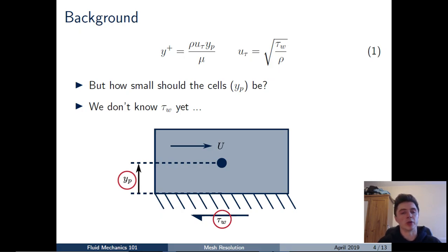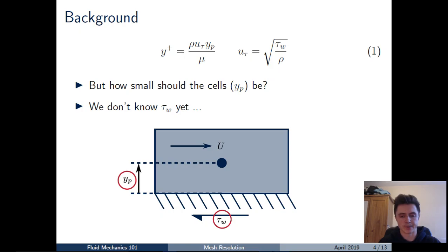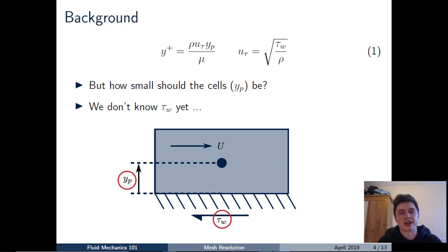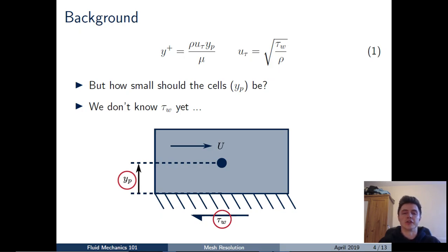We're going to be targeting a value of Y-plus: less than five for a viscous sub-layer resolved treatment, or between 30 and 200 for a log-law model. Before starting our CFD simulation, we don't yet know what Y-plus is. To target a value of Y-plus, we need to know how large to make our cells — what value of YP to use when constructing the mesh. This will correspond to either the height of the first cell in an inflation layer off the wall, or the height of the first cell in a block-structured grid.